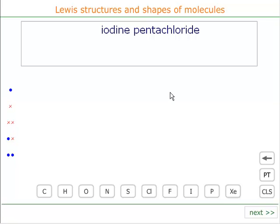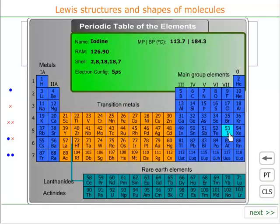The Lewis structure and shape of iodine pentachloride. Iodine, which we remember, is in group 7. It's got 7 electrons of its own.